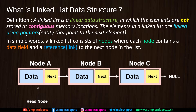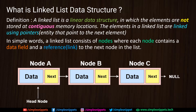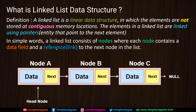When I say pointers, it's not necessarily the pointers in C++. What I mean is some kind of pointing mechanism or linking mechanism is used, wherein one node or entity is linked to the next one. In C++ we use pointers, but in Java we use a different way since we don't have pointers there. In simple words, a linked list consists of nodes where each node contains a data field with some value, and another field which is a reference linked to the next node in the list.